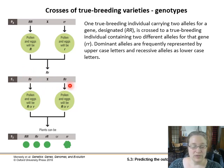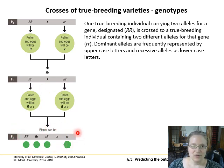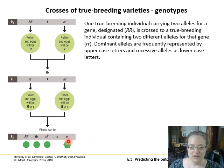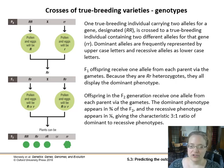If we cross those F1 individuals with each other, there's a chance that the pollen and eggs will carry either one allele from mom or dad. In the F2 generation we get every possible combination, and three of these genotypes will result in the dominant phenotype — the smooth pea — while the homozygous recessive genotype results in the recessive trait, the wrinkled pea. It's not that all offspring always segregate in this three-to-one ratio.